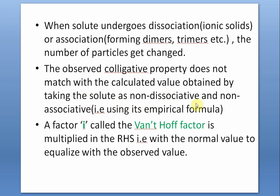When the observed colligative property does not match with the calculated value obtained by taking the solute as non-dissociative or non-associative — using its empirical formula like glucose C₆H₁₂O₆ or NaCl as NaCl, not as Na⁺ and Cl⁻ — the result will not match the actual observed value. To account for this, a factor called the van't Hoff factor i is multiplied on the right-hand side with the calculated normal colligative value to equalize it with the observed value.